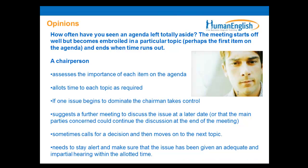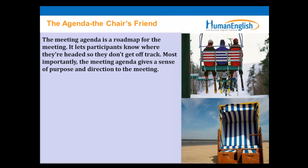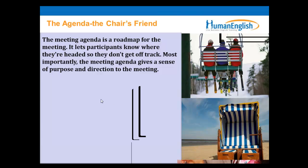The other thing a chairperson needs to do is to follow the agenda — the agenda is like the chair's friend. A meeting agenda is a roadmap for the meeting. It lets participants know where they're headed so they don't get off track. Most importantly, the meeting agenda gives a sense of purpose and direction. It helps to organize the meeting and keep the meeting on track.